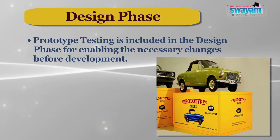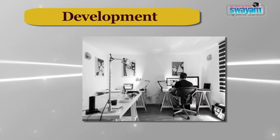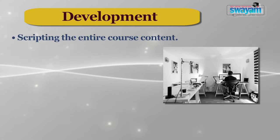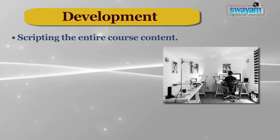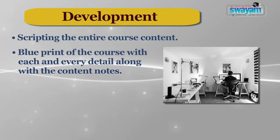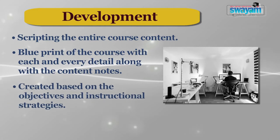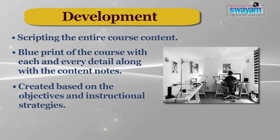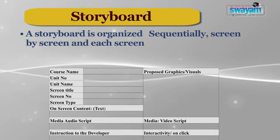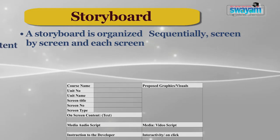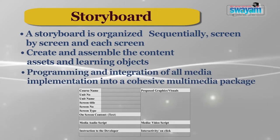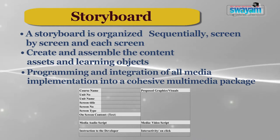The next stage is the Development phase, which is related to the creation of a storyboard. A storyboard scripts the entire course content — in e-content development, it describes a step-by-step script of the final outcome of the e-content. It is like a blueprint of the course with every detail along with content notes, organized sequentially screen by screen, with each screen laid out with design notes and specifications. Developers create and assemble content assets and learning objects, and programming and integration of all media elements into a cohesive multimedia package are part of this phase.